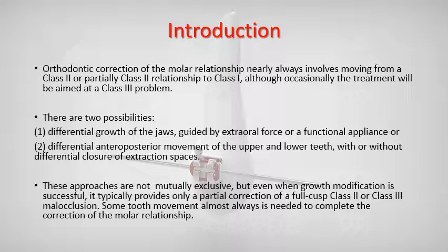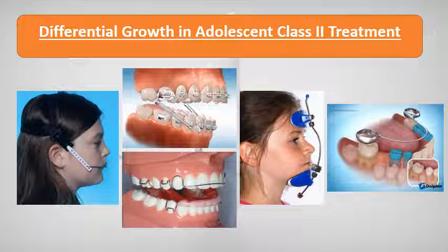There are two possibilities: differential growth of the jaws guided by extra-oral force or a functional appliance, or differential anterior-posterior movement of the upper and lower teeth with or without differential use of extraction space. These approaches are not mutually exclusive, but even when gross modification is successful it typically provides only a partial correction of a full cusp Class 2 or Class 3 malocclusion. Some tooth movement almost always is needed to complete the correction of molar relationship.